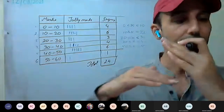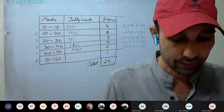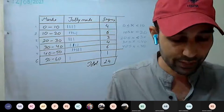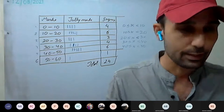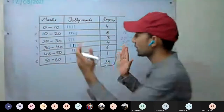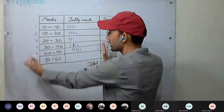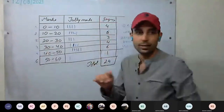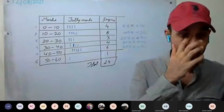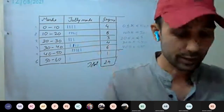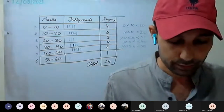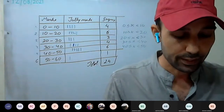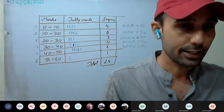Daily temperature is a continuous variable — it can take any value. The range of the data 7, 13, 6, 25, 18, 20, 16: range means the difference between the highest and lowest values. Subtract 6 from 25 — you get 19. So 19 is the range.